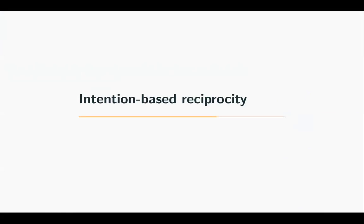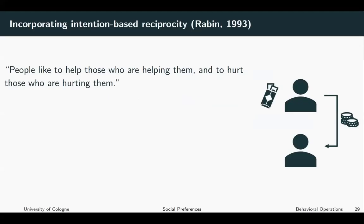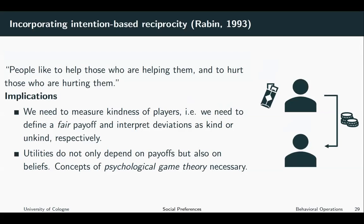Next, we want to look at an intention-based reciprocity model. The idea is to incorporate intention-based reciprocity into an analytical model, and it was first proposed by Rabin in 1993. The basic idea behind intention-based reciprocity is that people like to help those who are helping them and to hurt those who are hurting them. This is the basic intuition that should now be incorporated into a model.